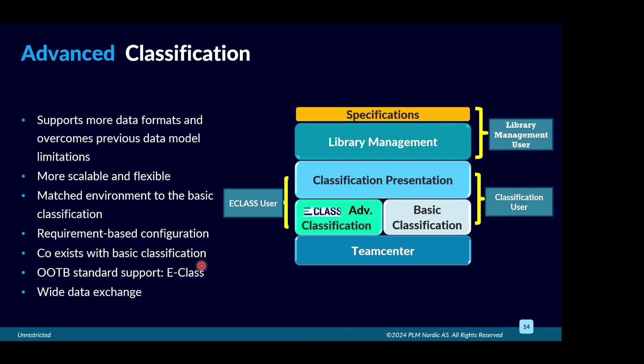It is more efficient, more scalable, more flexible, data formats have changed, and more limitations are removed. Earlier it was only 200 attributes possible, now it's unlimited attributes possible. Earlier you had limited data exchange formats; now you have more formats — not just TCXML and PLMXML, but also JSON and more.